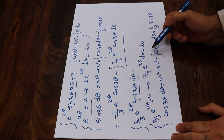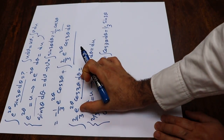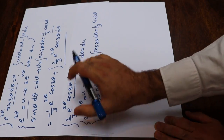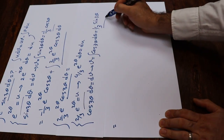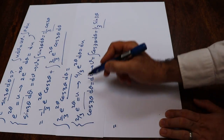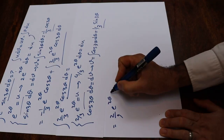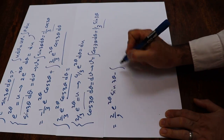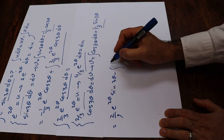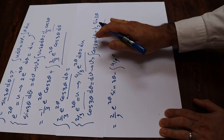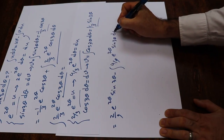Substituting into the integration by parts formula, this integral equals U times V, which is 2/3 times 1/3, giving 2/9 times e^(2θ) times sine 3θ, minus the integral of V dU, which is 4/9 times the integral of e^(2θ) times sine 3θ dθ.